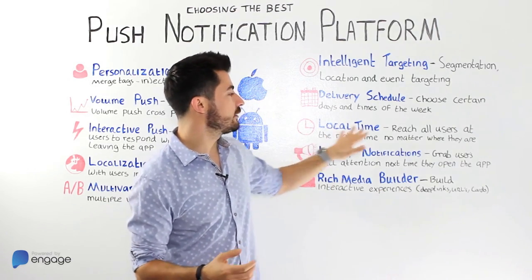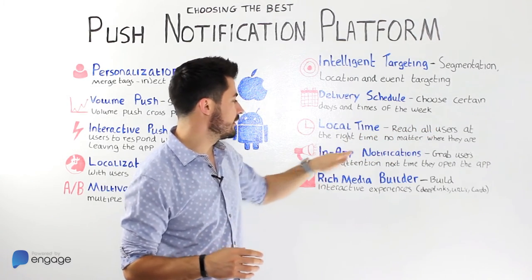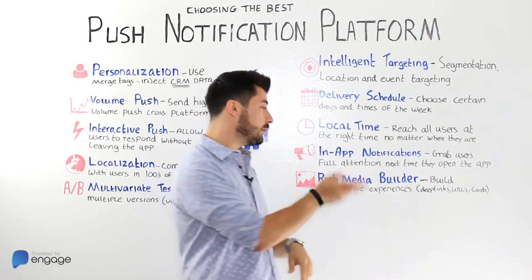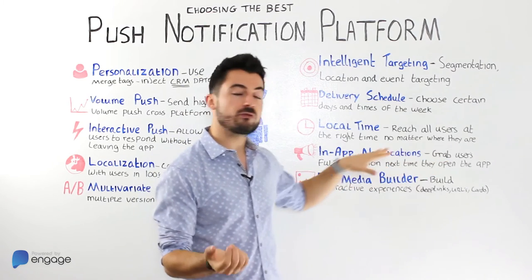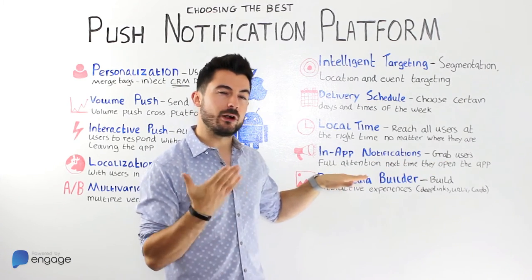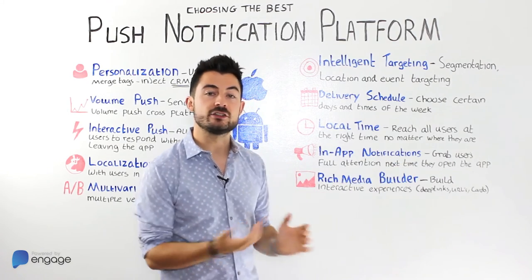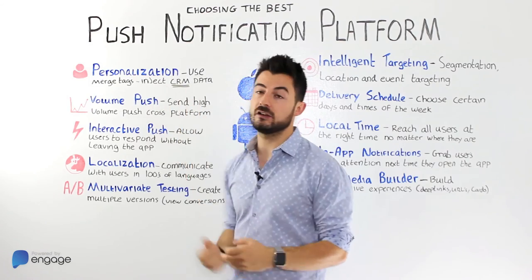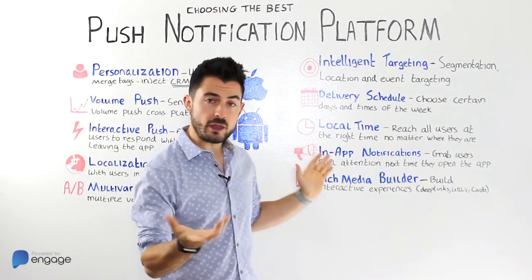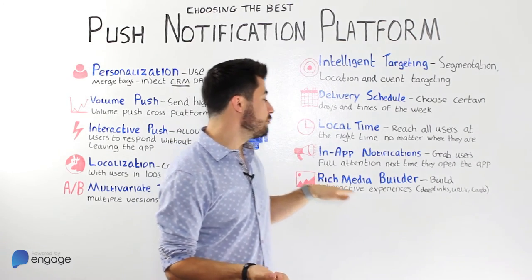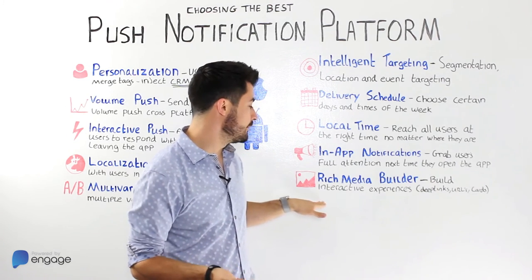This is moving into the realms of machine learning and predictive analytics, but it's a great feature if it comes built into a platform. I've put in-app as a separate item — it's a little bit separate from push notifications, but having the option to grab users' attention while they're already in the app and captive, and sliding in an in-app notification, can be a great feature to use alongside push, and they can really complement each other.